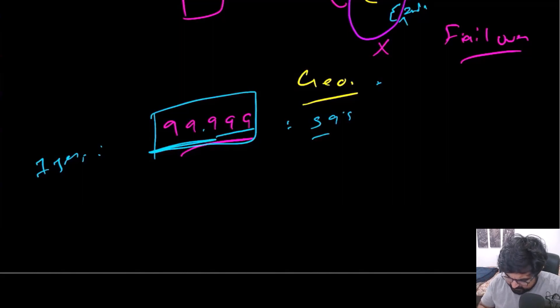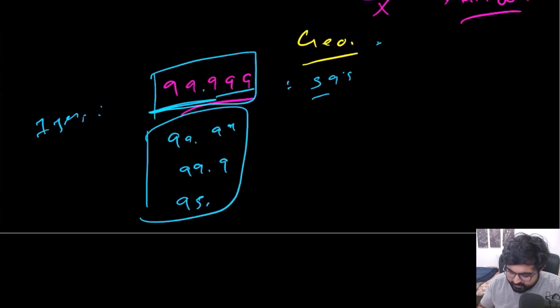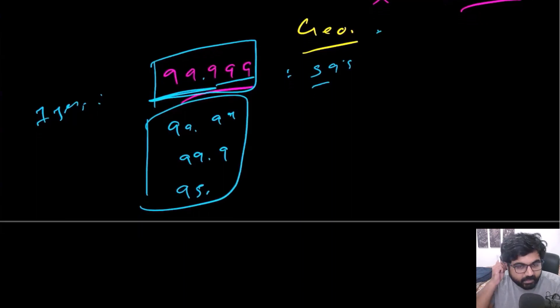There are a bunch of different consensus. There is 99.99% as well, 99.9% as well, 95% as well. And different availability, of course, comes with different decisions and more scrutiny.